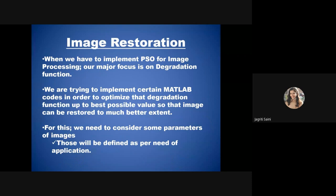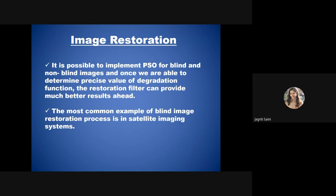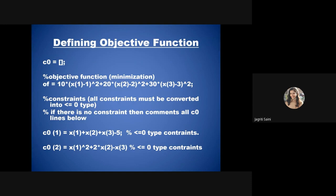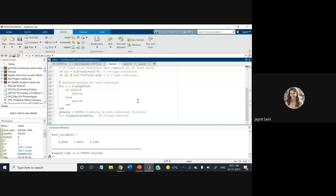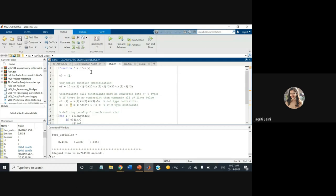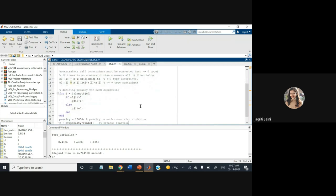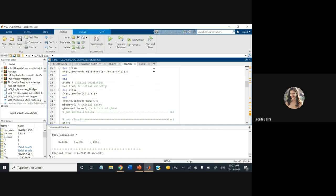When implementing PSO for image processing, the major focus is on the degradation function — optimizing it using MATLAB or Scilab code to ensure the restored image achieves the finest contrast or best output values. A general MATLAB formulation is shown on screen, including a mathematical equation to optimize, constraints, a penalty, and the main PSO algorithm with boundary conditions.